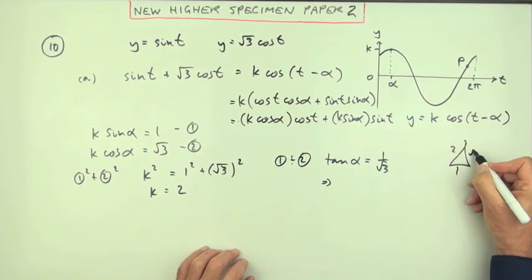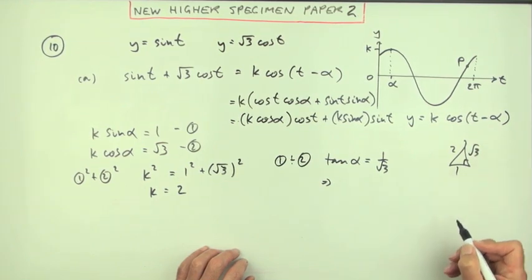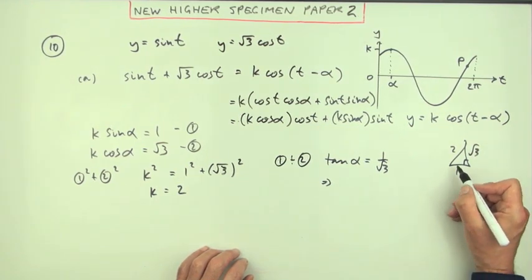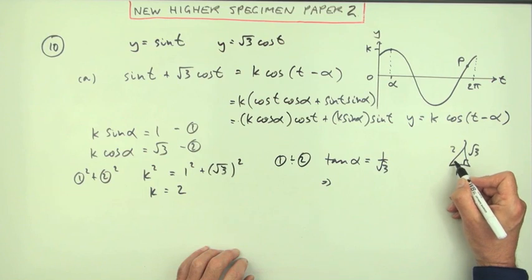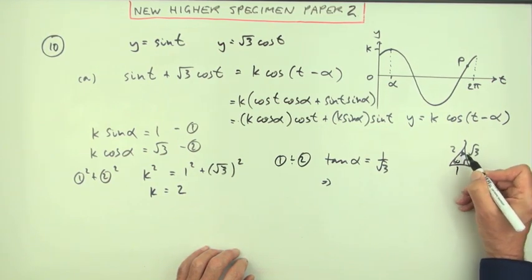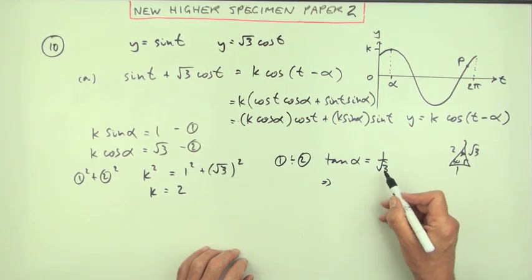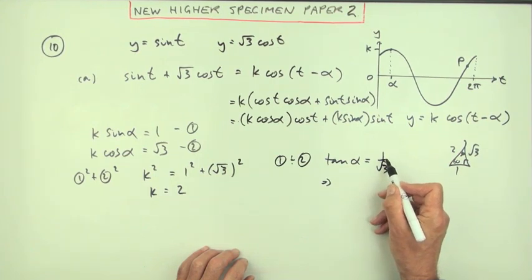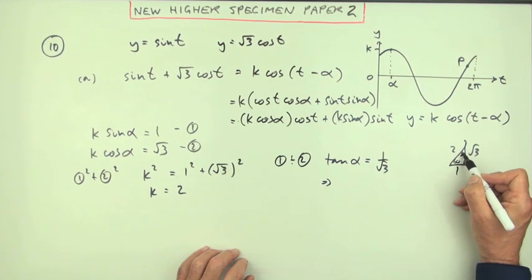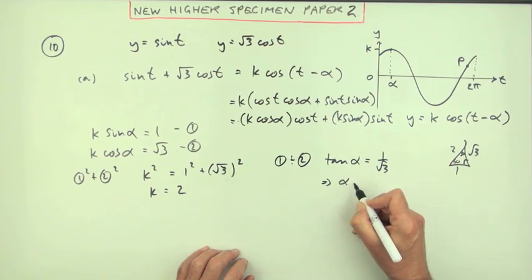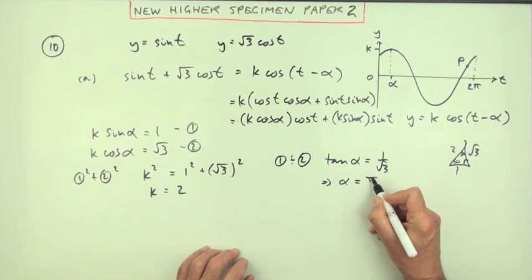This is one you know: 1, 2, root 3. That's a funny little triangle there where this part would be... I'll put 60, 30, but I'll change it to radians. So if the tangent is 1 over root 3, that's the opposite over the adjacent. That's opposite of that 30, which is pi upon 6. So that means alpha is pi upon 6.